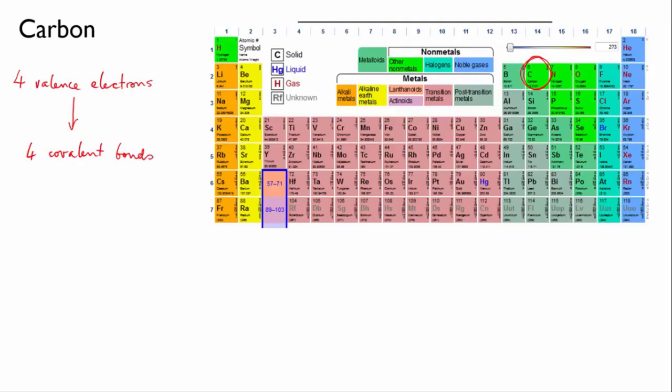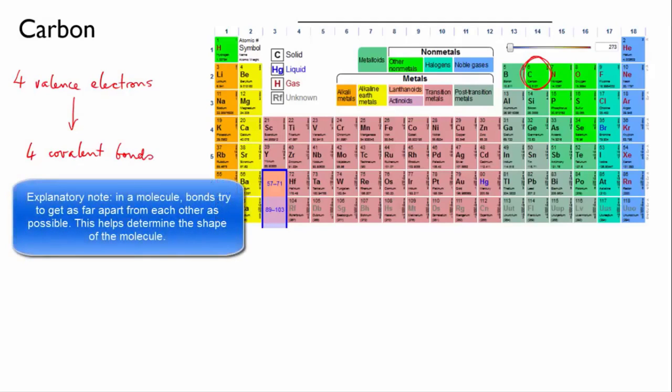Now since like charges repel, electrons in neighbouring bonds in a molecule like to be as far away from each other as possible. So molecules arrange themselves so that their bonds are positioned as far apart as possible.